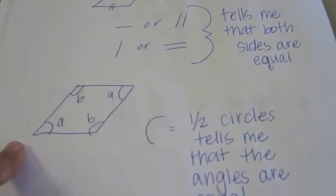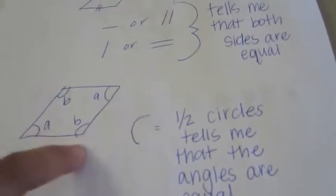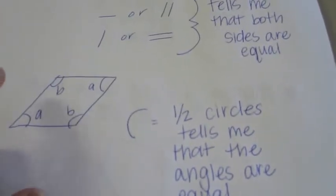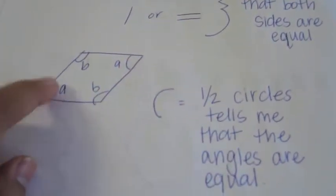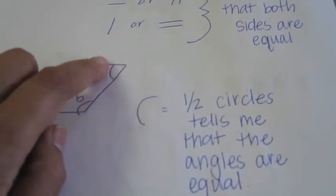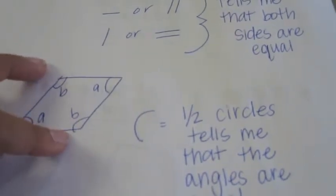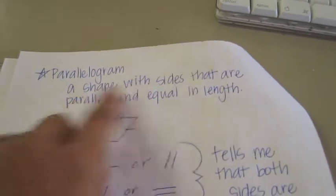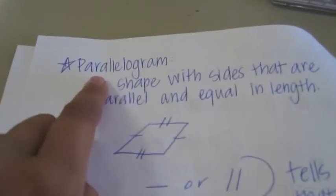Now if you look at this parallelogram, this half-circle right here tells me that the opposite angles are equal. Opposite means the other side. So angle A here and angle A there are equal. Angle B here and angle B there are equal. A shape with sides that are parallel and opposite angles that are equal — that is a parallelogram.